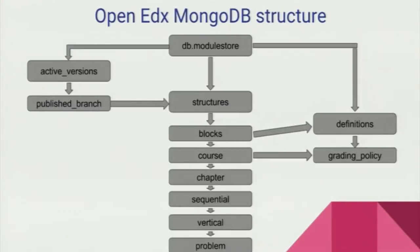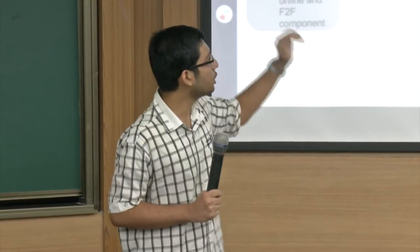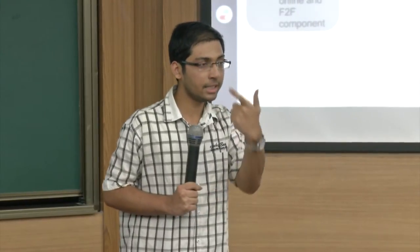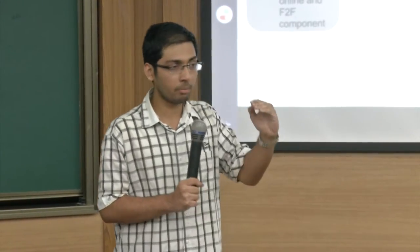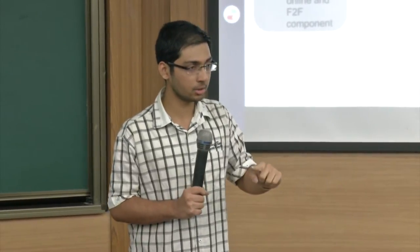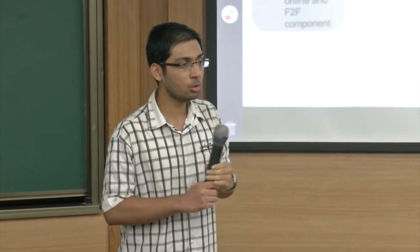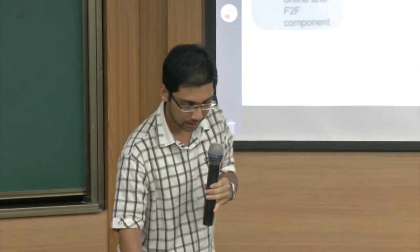The structure of the IIT Bombay X database stores the marks with a problem ID for each problem and each participant. We have to filter from MySQL accordingly. But these problem IDs are stored only in the Mongo database, so we have to get those problem IDs from Mongo. The Mongo database has a complex hierarchical structure.